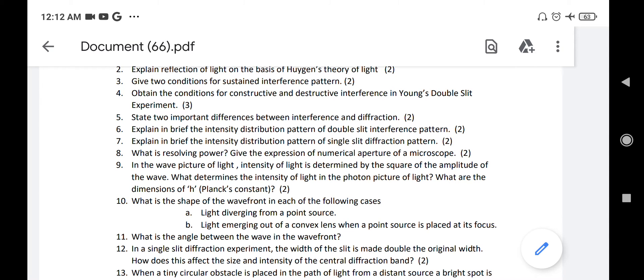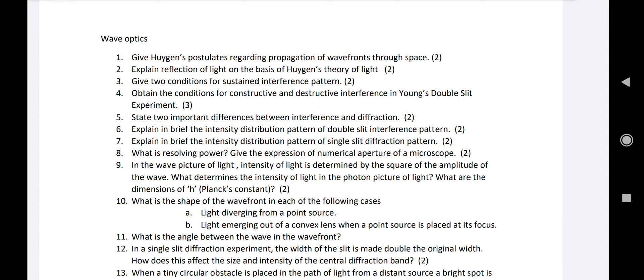Number 10: This is a very important question. What is the shape of the wavefront if light is diverging from a point source? The shape of the wavefront is spherical. Number b: light emerging out of a convex lens when the point source is placed at its focus. Shape of the wavefront is plane.